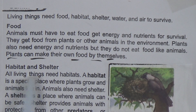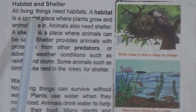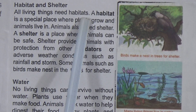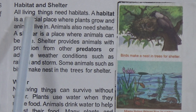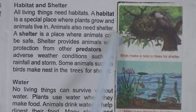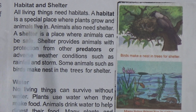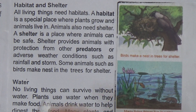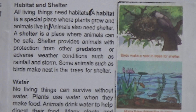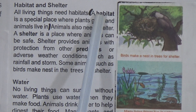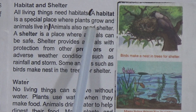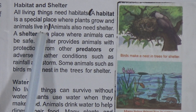Next: Habitat and Shelter. All living things need habitats. A habitat is a special place where plants grow and animals live. This is the definition of habitat — you can mark this line. Habitat is a special place where plants grow and animals live.